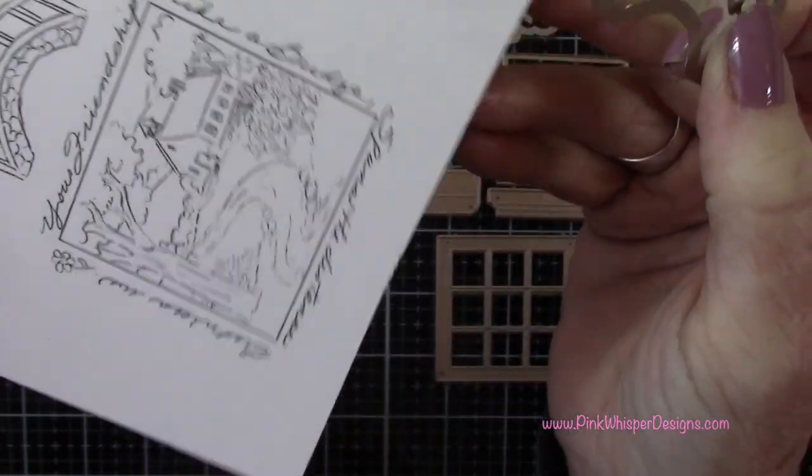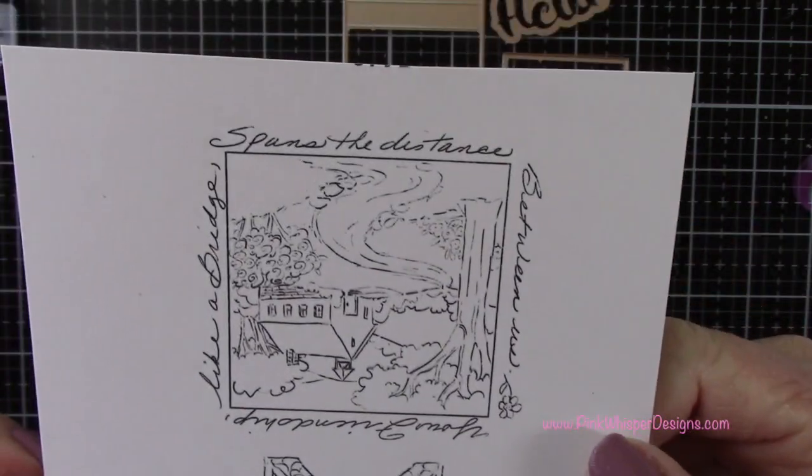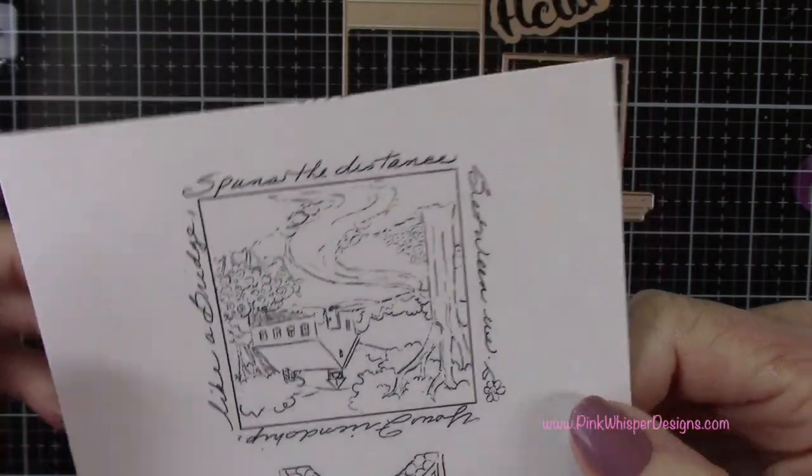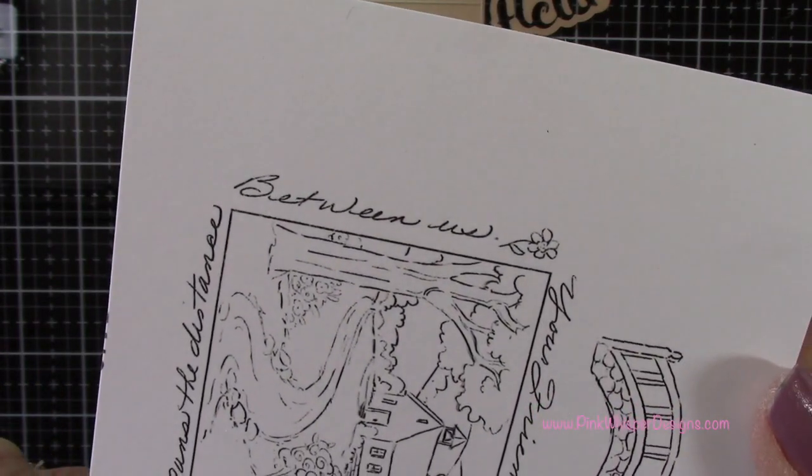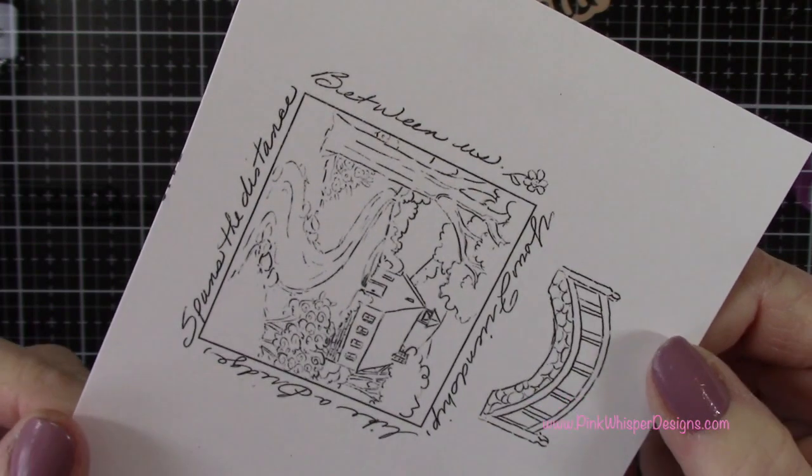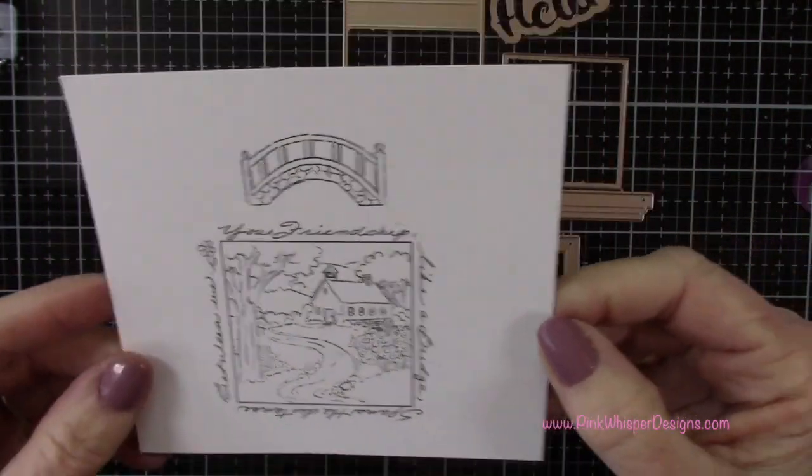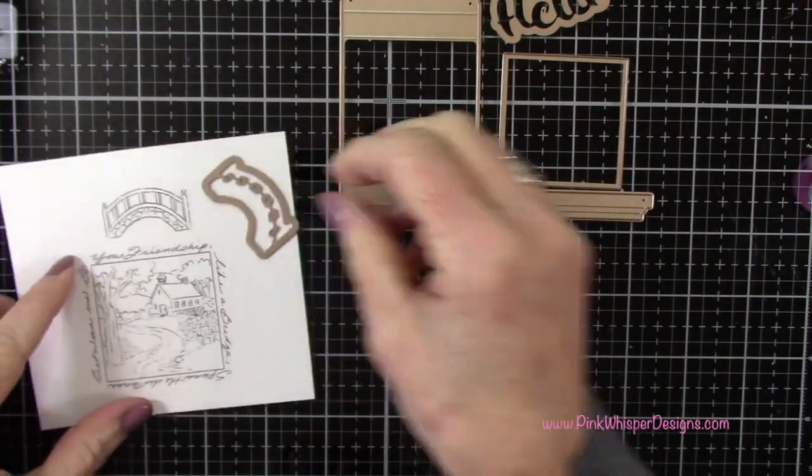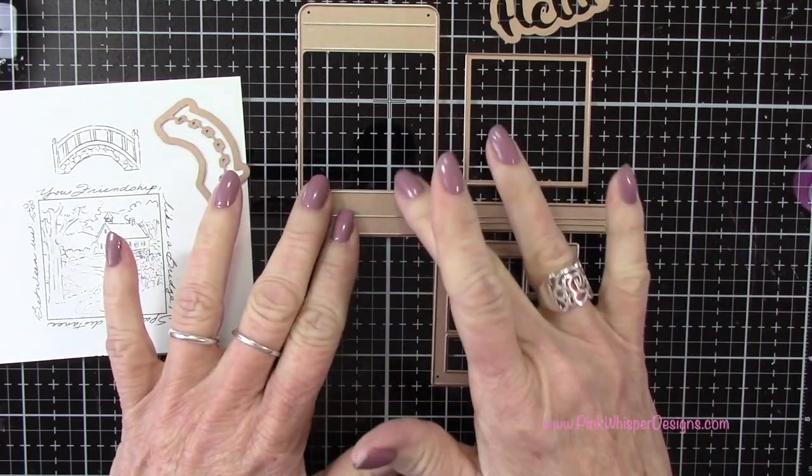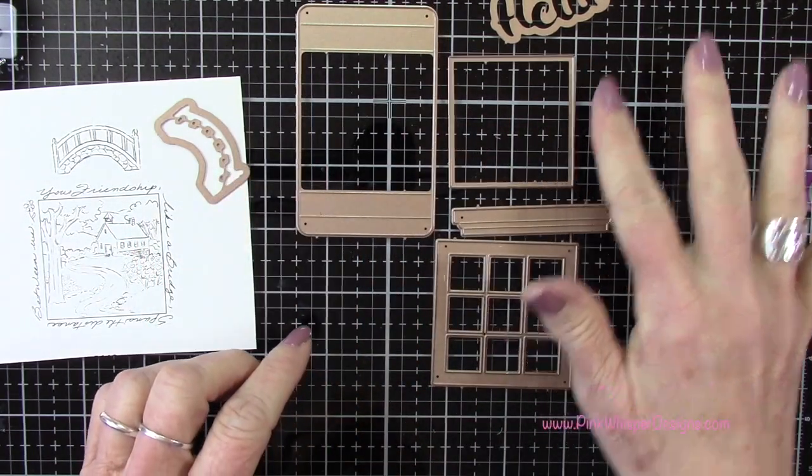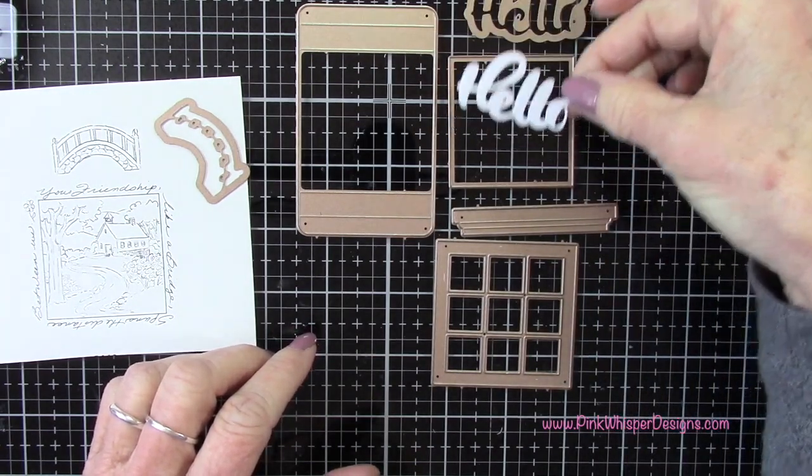This stamp set says 'your friendship like a bridge spans the distance between us' and that is just so pretty. You can use this stamp all by itself just the way it is, but we're going to do something a little bit different with it today. You get those two stamps and the die with the one set, and then you get all of these dies with the shadow box window die set. You also get that die that says hello and we're going to be using that a little bit later on.